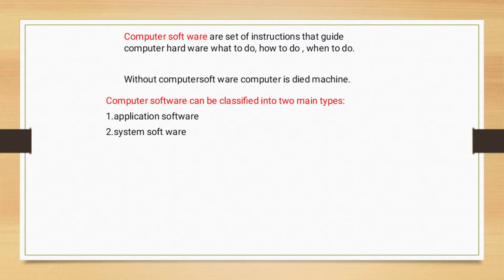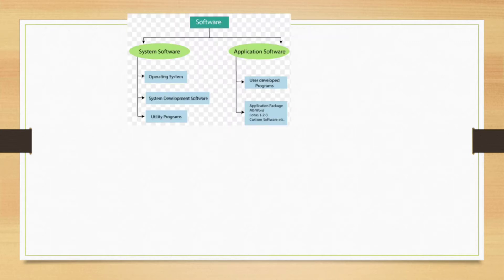Without computer software, a computer is a dead machine. Computer software can be classified into two main types: application software and system software.